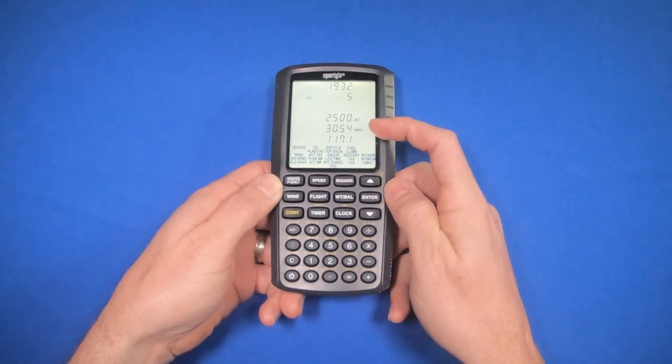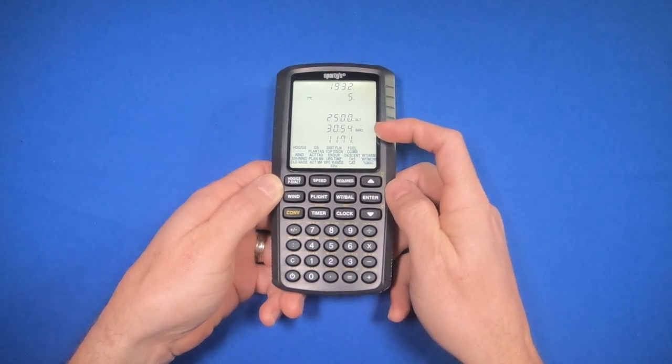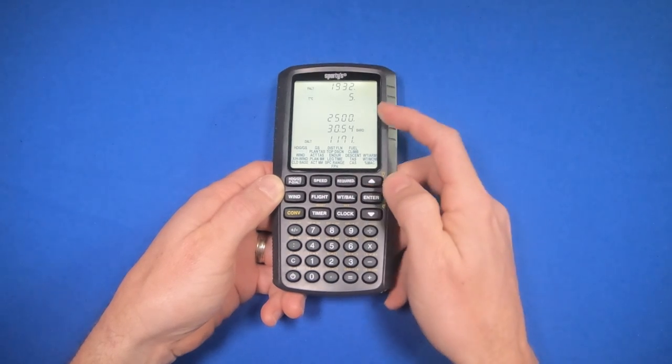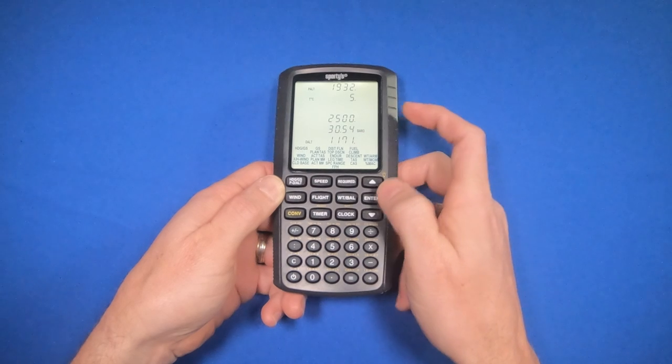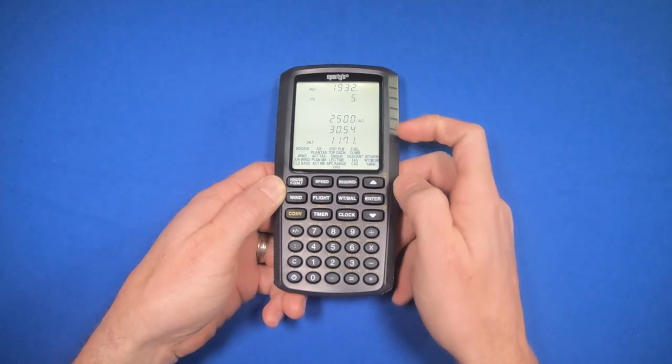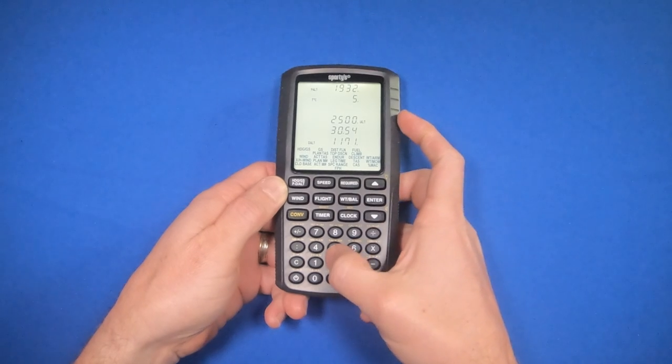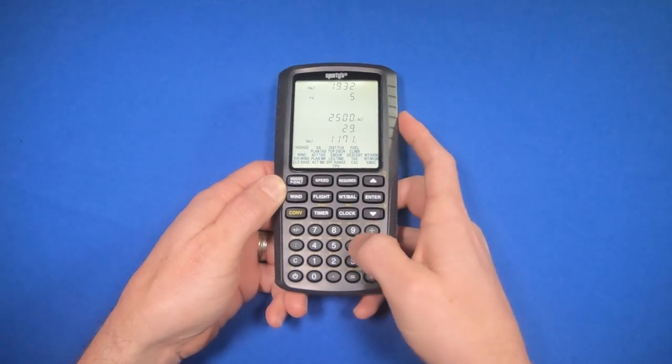Let's see what happens when we do the opposite - when it's warm and there's a low pressure. We're going to hit enter. The indicated altitude indication will flash, and we're going to keep the 2,500 feet in there. For the barometric pressure, we'll put 29.63.